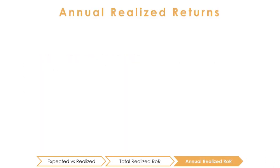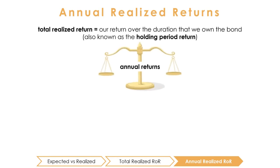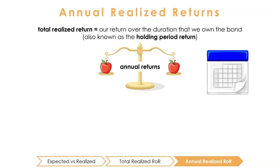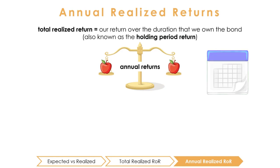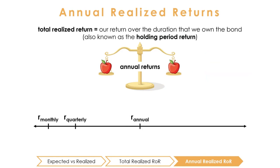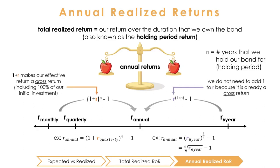So now we know how to calculate the total realized return of our investment, known as our holding period return. But when we deal with interest rates, we usually want to express our returns on an annual basis so we can better compare them between investments. In finance, we commonly express rates in annual terms so that we're comparing apples to apples. To express our realized return as an effective annual rate, we simply raise our gross holding period return to the power of 1 over n, where n is the number of years we hold the bond, and then subtract 1. By taking the nth root of the gross holding period return, we're working backwards to figure out what the annual return, if compounded each year, would be.